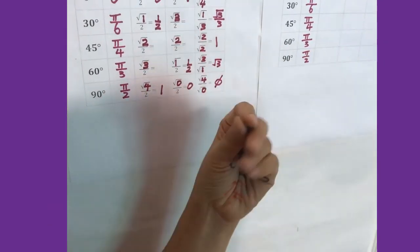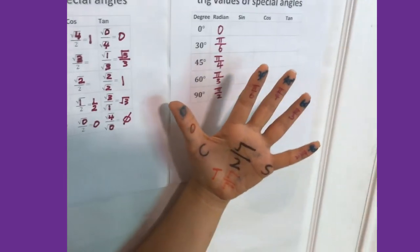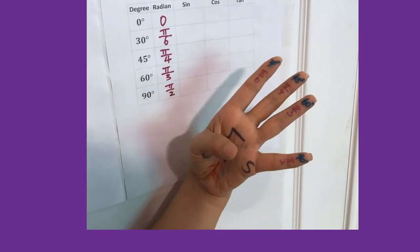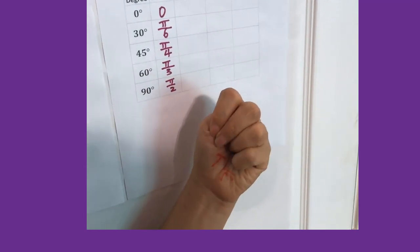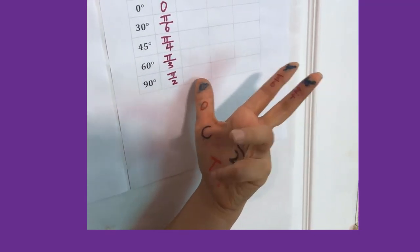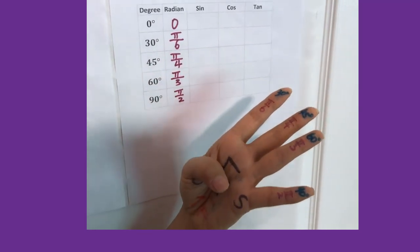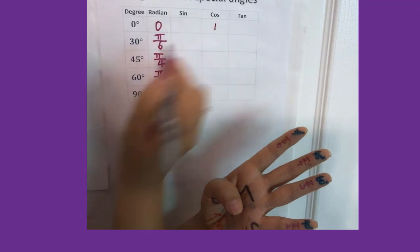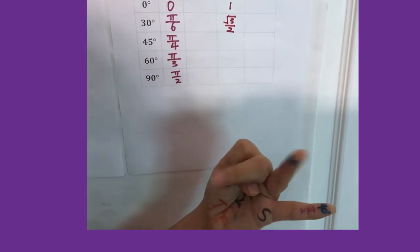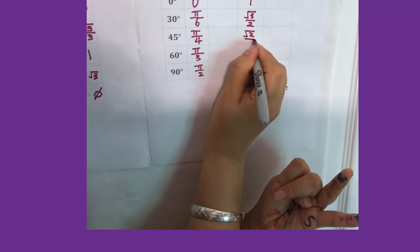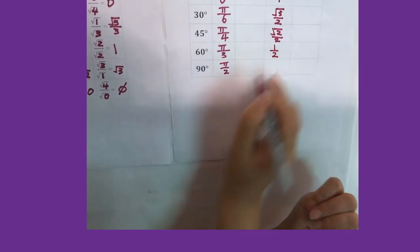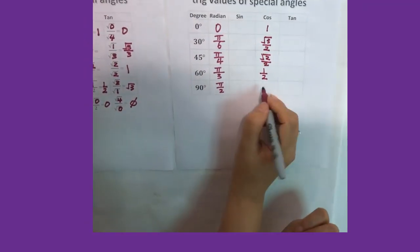Let's do the whole thing together — cosine, then sine, then tangent — and fill out the table. For cosine: cosine 0 equals 1, cosine 30 equals square root of 3 over 2, cosine 45 equals square root of 2 over 2, cosine 60 equals 1 over 2, cosine 90 equals 0.